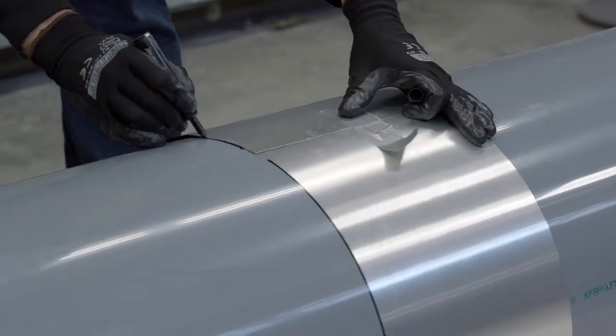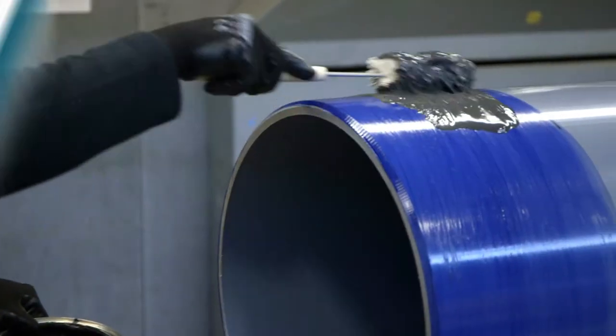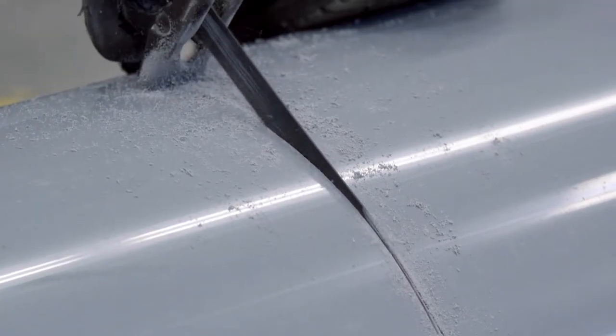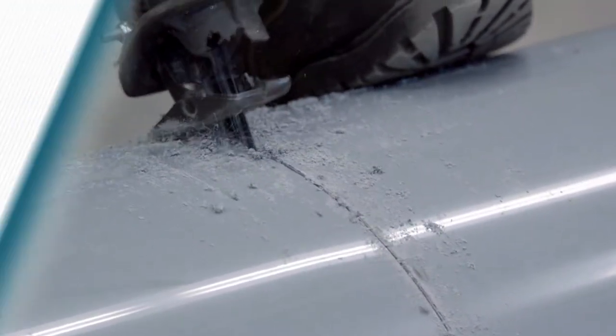What follows is the solvent welding procedure for large diameter System 15 and System XFR pipe. One: cutting the pipe. It is important to cut the pipe squarely so that the maximum bonding surface area is achieved on the pipe end.